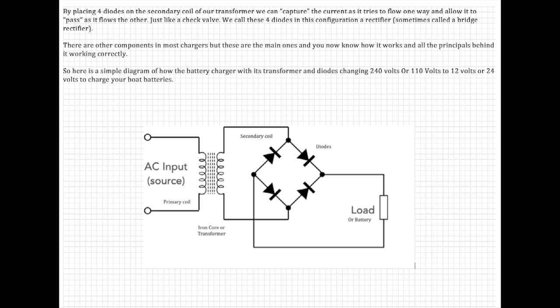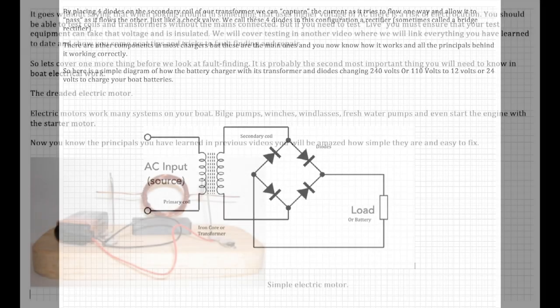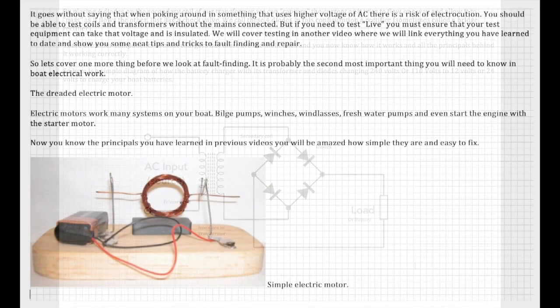So this simple diagram of a battery charger with its transformer and diodes is changing 240 volts or 110 volts to 12 or 24 volts to charge your batteries. You now know how your battery charger works and its main components. Once you know how something works, you know how to fix it, or what to look for when it doesn't work properly.